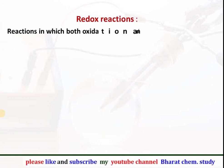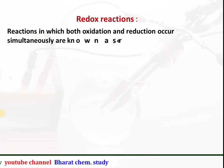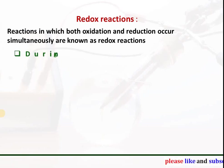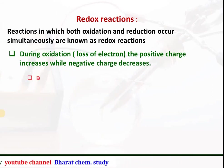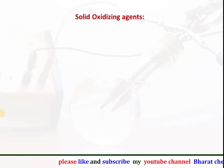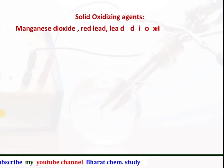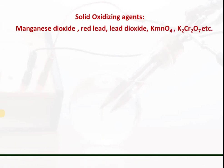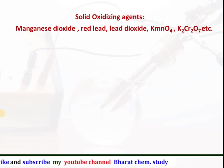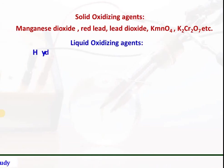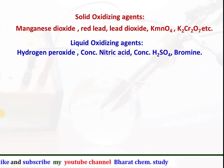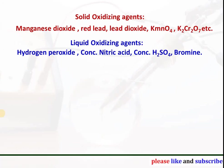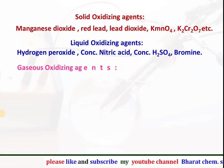Redox reaction: the reaction in which both oxidation and reduction occur simultaneously is known as a redox reaction. During oxidation, loss of electrons causes the positive charge to increase and negative charge to decrease. Solid oxidizing agents include manganese dioxide, red lead, lead dioxide, KMnO₄, and K₂Cr₂O₇. Liquid oxidizing agents include hydrogen peroxide, concentrated nitric acid, concentrated sulfuric acid, and bromine.